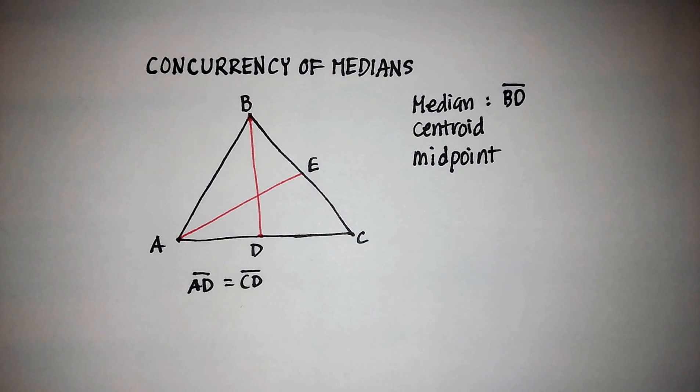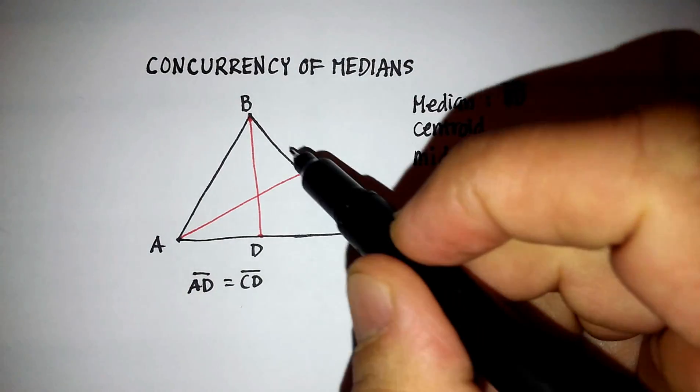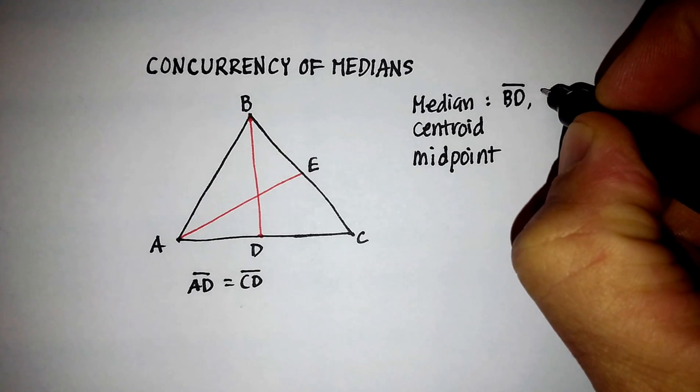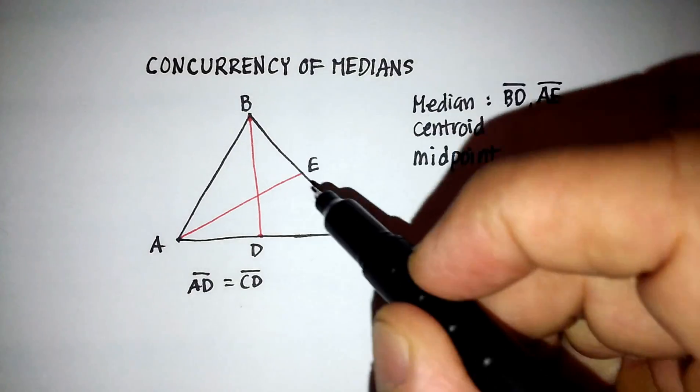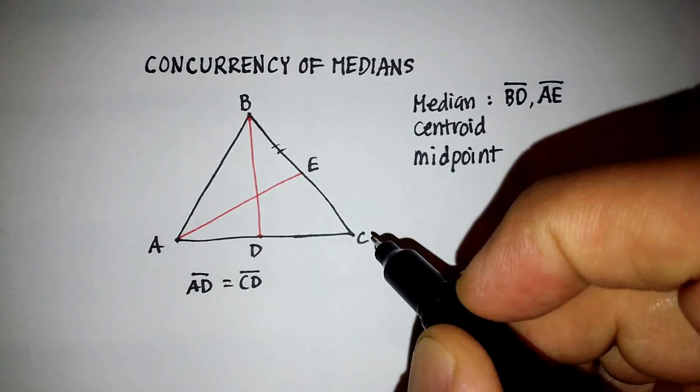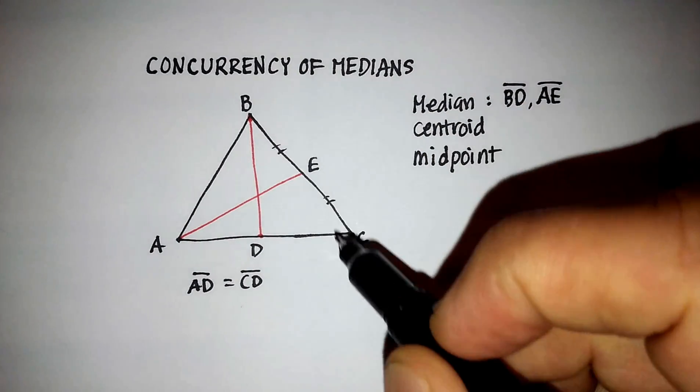And what line segment AE does is that it cuts line segment BC into two equal parts as well. All right. So another median here would be AE. And again, this BE, line segment BE is equal to line segment CE.